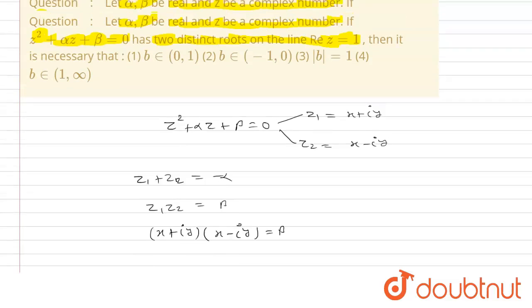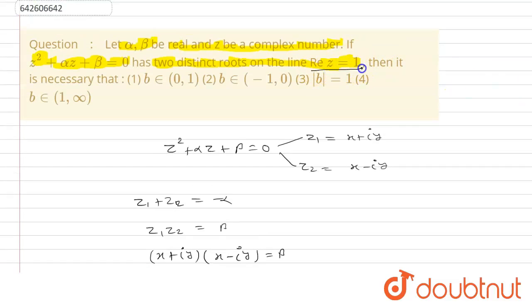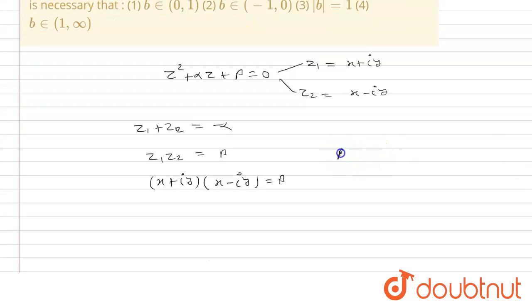Now, it is given that real part of z equals 1. That means if real part of z equals 1, so that means x equals 1 because x is a real part of this equation. So this will be 1 plus iota y multiplied by 1 minus iota y equals beta.